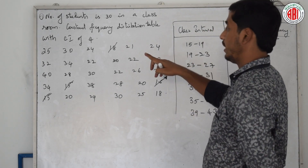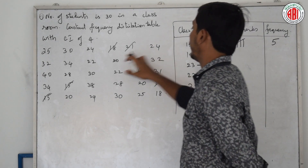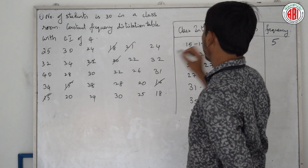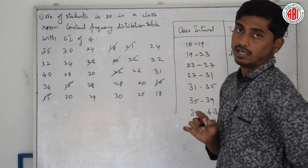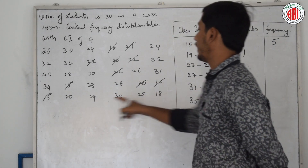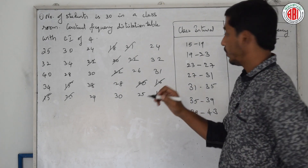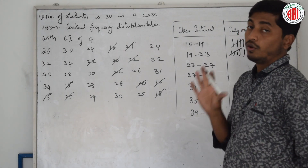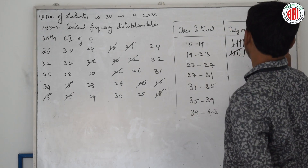Next, for 19 to 23: 19 is included here. Counting through, we find numbers 19, 20, 22, and others. However, we realize we missed 18 in the previous interval — correcting that makes it 6. In tally marks we can only write up to 5 and then cross, so we get a total of 7 for this interval.